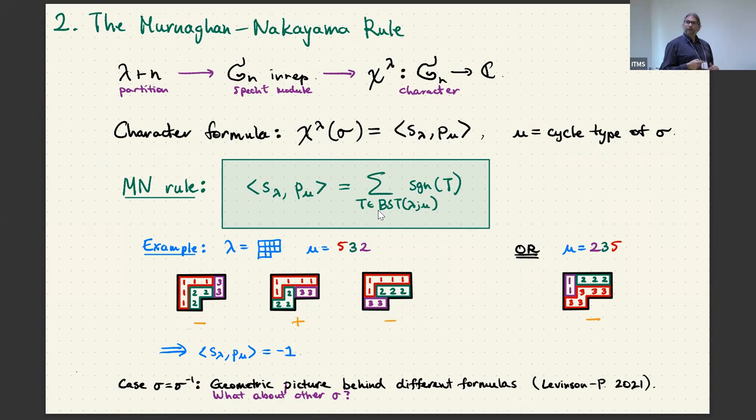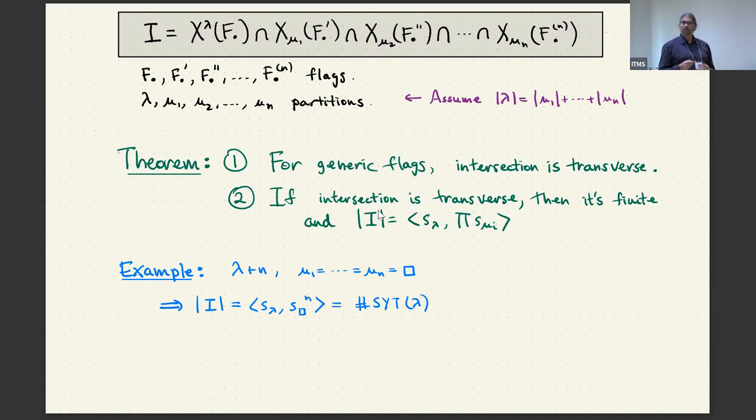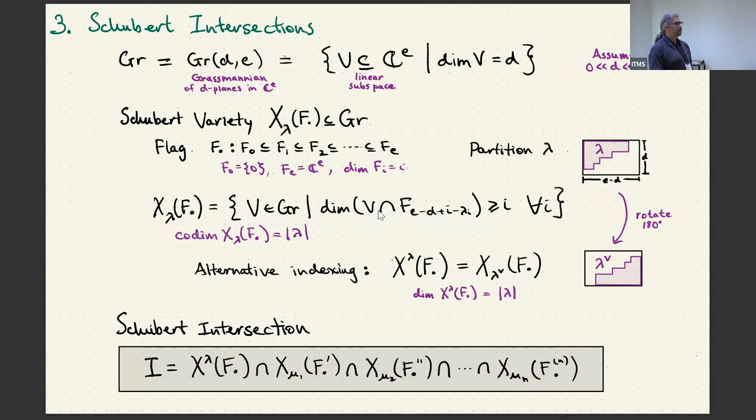What I'm going to talk about today is something like this in the case where the permutation sigma has order which is a prime power. It's a very different story from what's happening in the case of an involution, but it still satisfies these two criteria. In order to tell you about that, I have to talk a little bit about Schubert intersections, which are the other topic of my title.